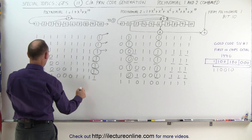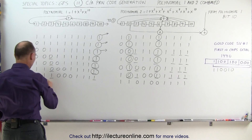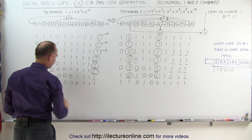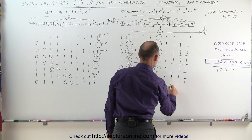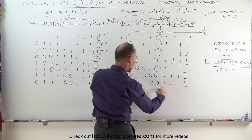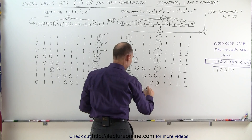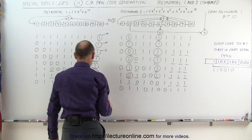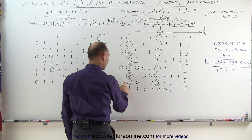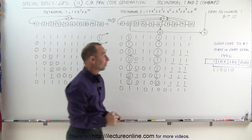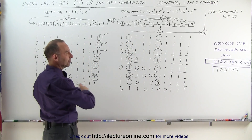We add up 3 and 10 — 1 plus 1 is 2, even, that becomes a 0 — goes into the first bit position, everything else shifts over. Over here we grab bits 2, 3, 6, 8, 9, and 10 — that's 4 ones, even, becomes a 0 — first bit position, everything else shifts over. We grab the 10th bit position, the 2nd, and the 6th: 1 plus 1 is 2, plus 0 is 2, which is even, that becomes a 0. That's our next chip in the 1,023 chip message going out from the satellite to the receiver.